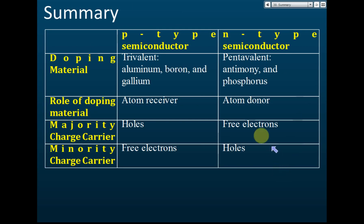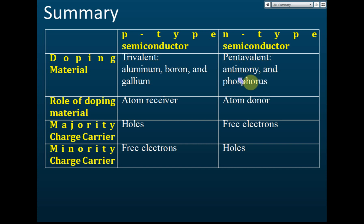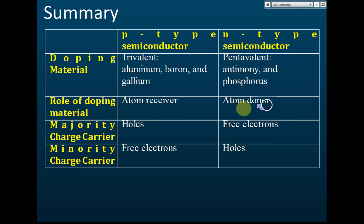This summary table is very important. For P-type semiconductor, we dope trivalent atoms like aluminium, boron, or gallium. For N-type semiconductor, we dope pentavalent atoms like antimony or phosphorus. The role of the doping material in P-type is the atom receiver — because it has a lot of holes that receive electrons. In N-type, the doping material is called the atom donor.